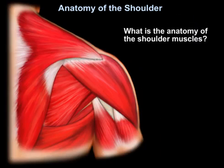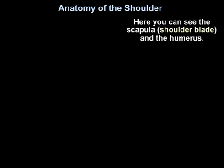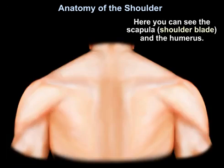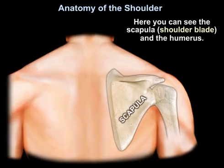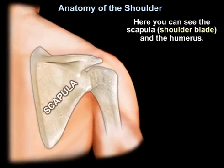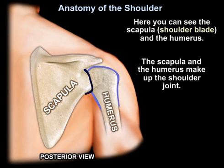What is the anatomy of the shoulder muscles? Here you can see the shoulder blade, or the scapula, and here you can see the humerus bone. These two bones make the shoulder joint.